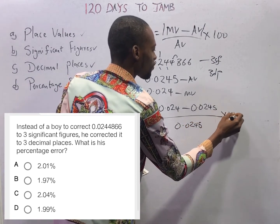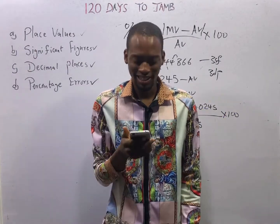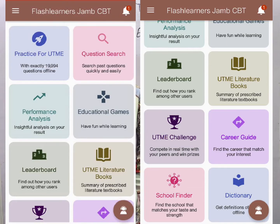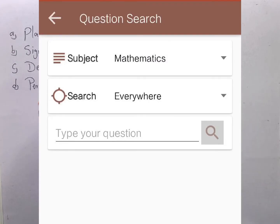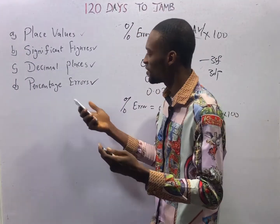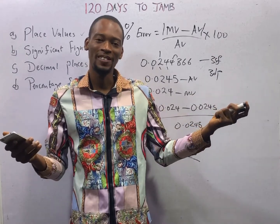Time for homework. Open the Flash Nenas Jam application, go to question search, and search 'percentage error'. Answer question number 1, question number 2, and question number 3. See you in the next episode.